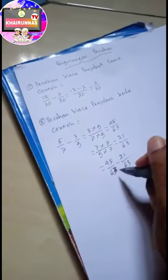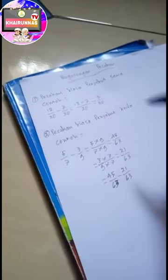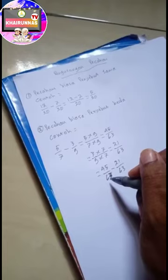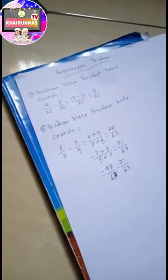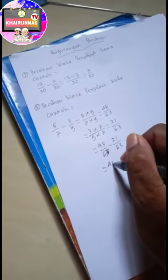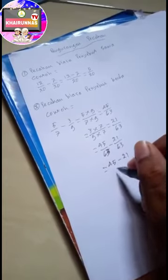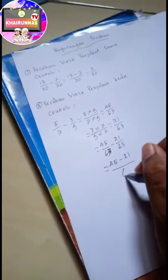Jadi ini sudah sama seperti di atas ya. Jadi langsung 45 dikurangi 21 per 63.